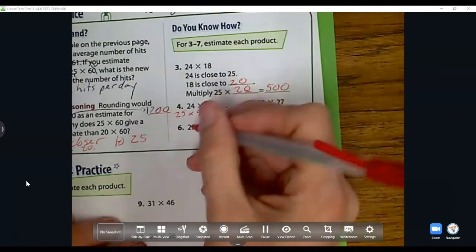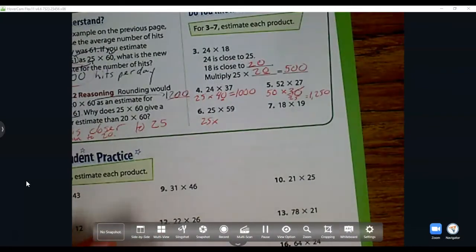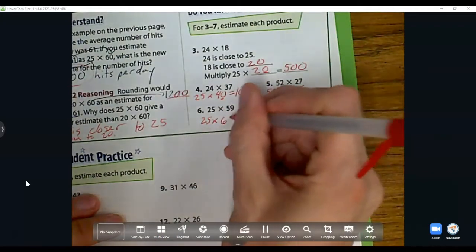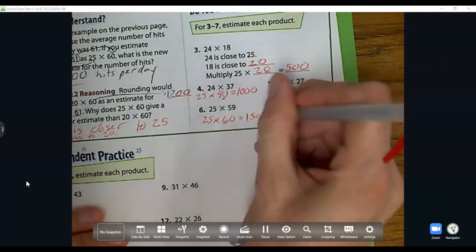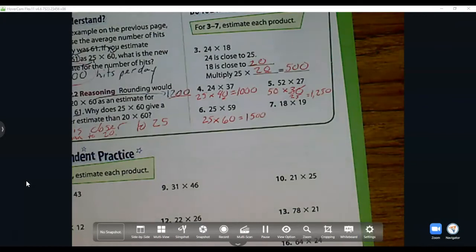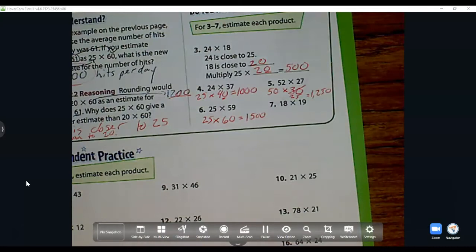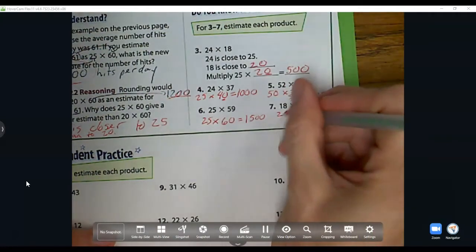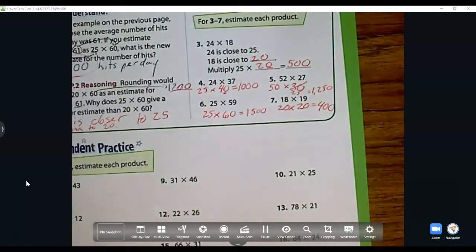Our next one: 25 is the same as 25, and 59 is going to be close to 60. 6 times 25, that's 150, and then I add that zero back on. Remember, we're using 25 because it's easy. We can go 25, 50, 75, 100 - we're counting by quarters. Next one: 18 is close to 20, 19 is close to 20. So 20 times 20 equals 400.